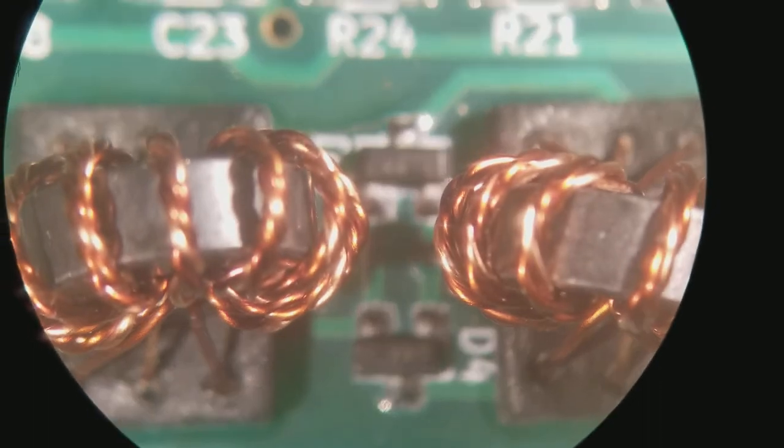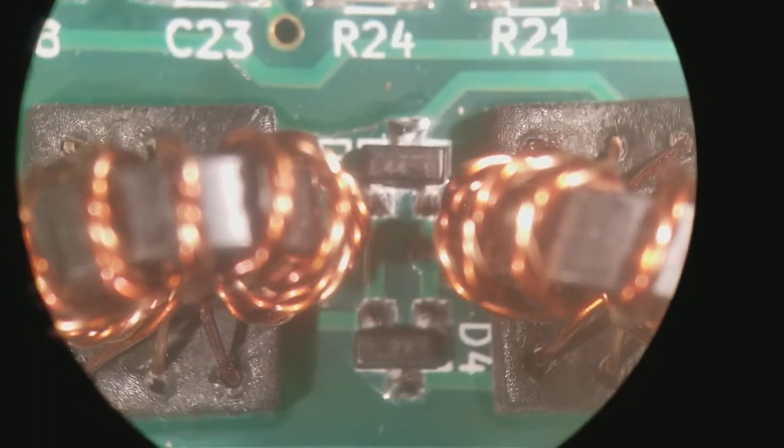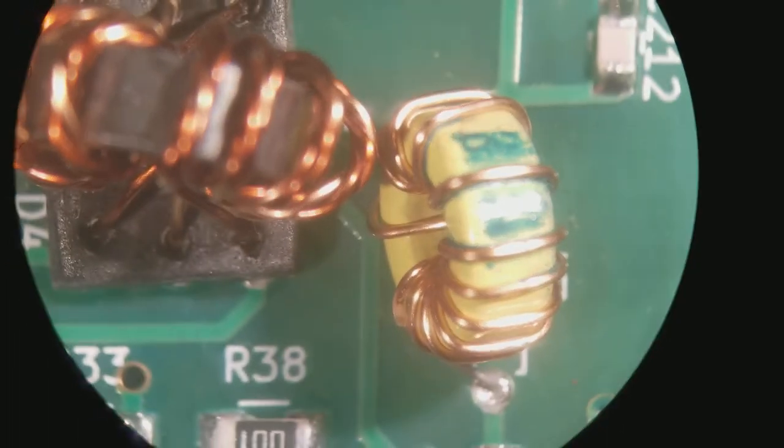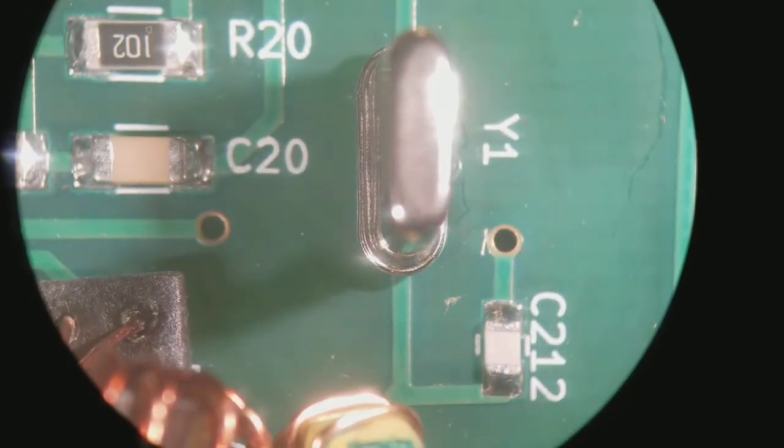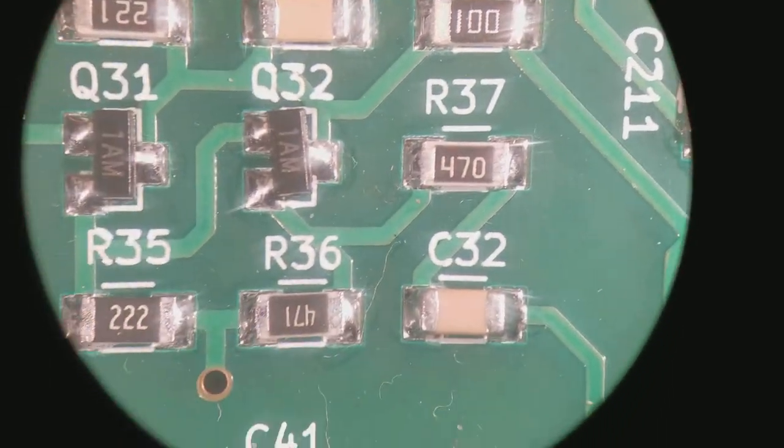And those toroids are looking pretty good. I saw pictures of a few on the Facebook group where the enameling had been torn off to the point where they were going to short.